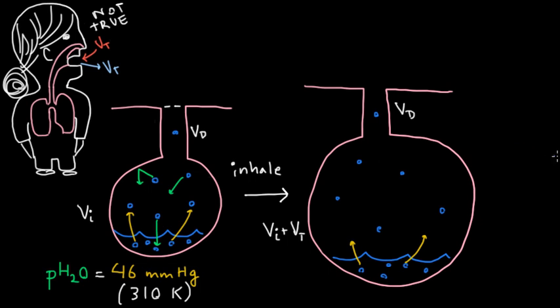So actually their partial pressure has decreased. And although they're still flying around at the same rate that they were before, there's actually going to be less of them going back into the liquid, because their partial pressure is now less than the vapor pressure of 46 millimeters of mercury.